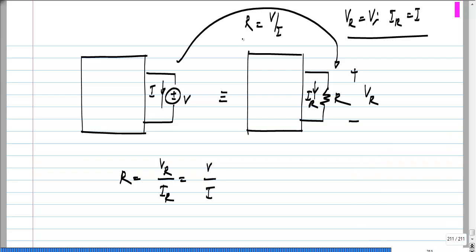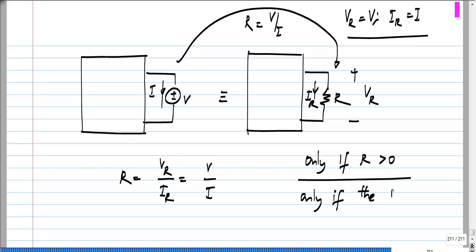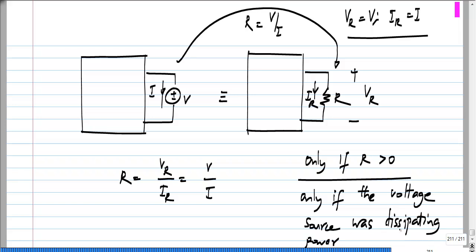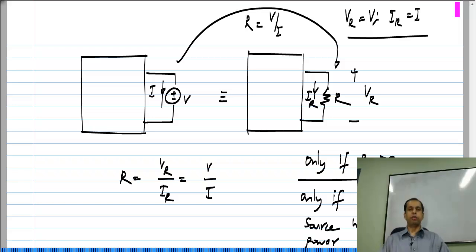Again, this has to be done only if R is greater than 0, meaning only if the original voltage source was dissipating power. That is also a variant of the substitution theorem. Sometimes this is useful to come up with simplified circuits — if you end up with too many current sources, you can replace some of them with resistors.